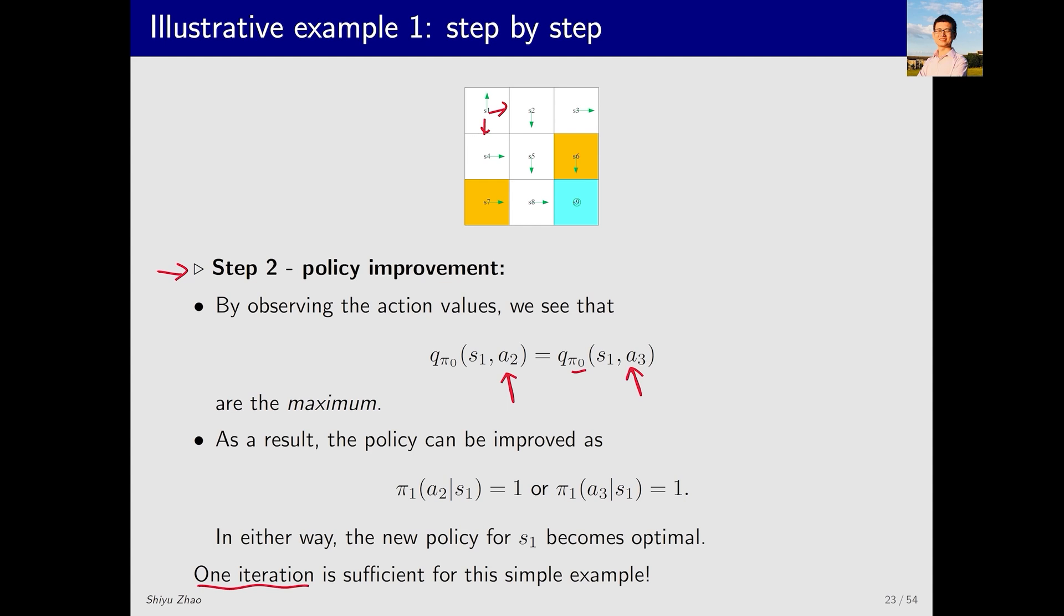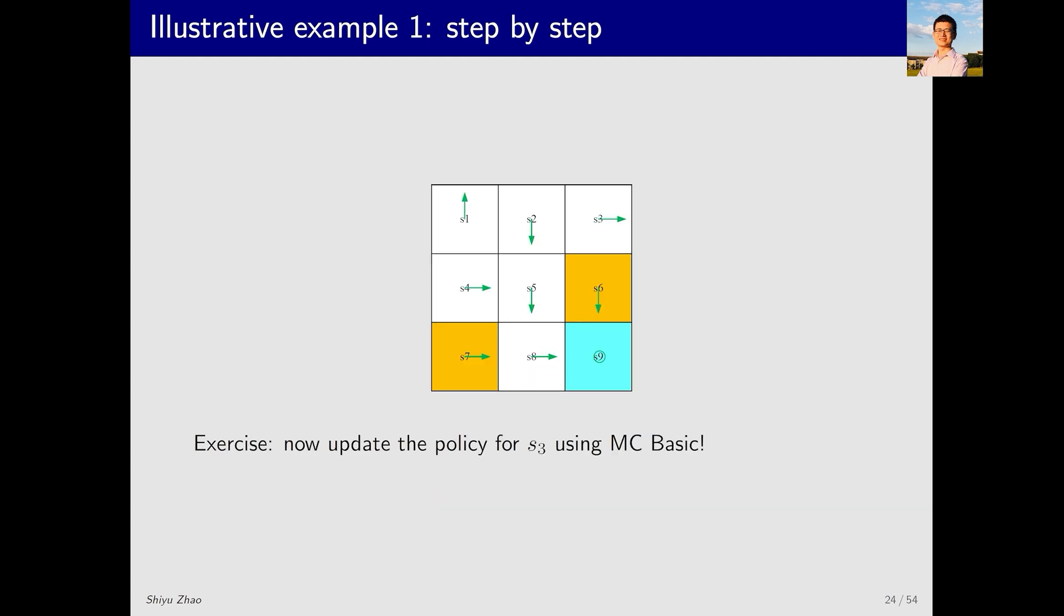One iteration is sufficient to find the optimal policy. That is because this example is simple in the sense that, besides A1, the policies of the surrounding states are already optimal. If this course were taught offline, I would pause for five minutes and ask the students to do an exercise, such as finding the optimal policy for S3 using the Monte Carlo basic algorithm. I would like to emphasize that it is important to do some exercise, as it can help better understand the contents.